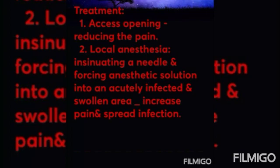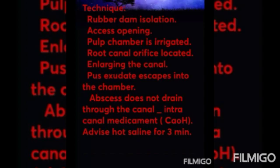Technique for access opening: rubber dam isolation is placed first. Access opening is completed painlessly by bracing the tooth with finger pressure. The pulp chamber is irrigated, avoiding forcing solution or debris into periradicular tissues. Root canal orifices are located using #8, 10, or 15 K-file or reamer as an explorer. Irrigation and debridement are continued while enlarging the root canal. When purulent exudate escapes into the chamber, it indicates the root canal is patent and draining, and the patient gets quick relief from pain.